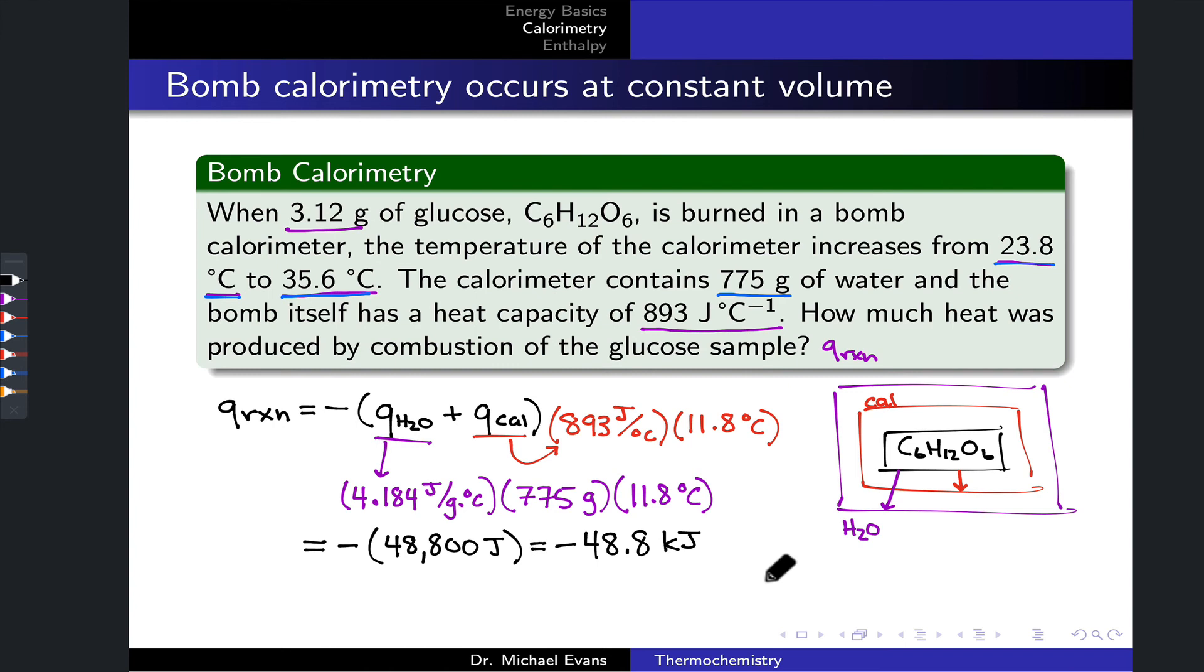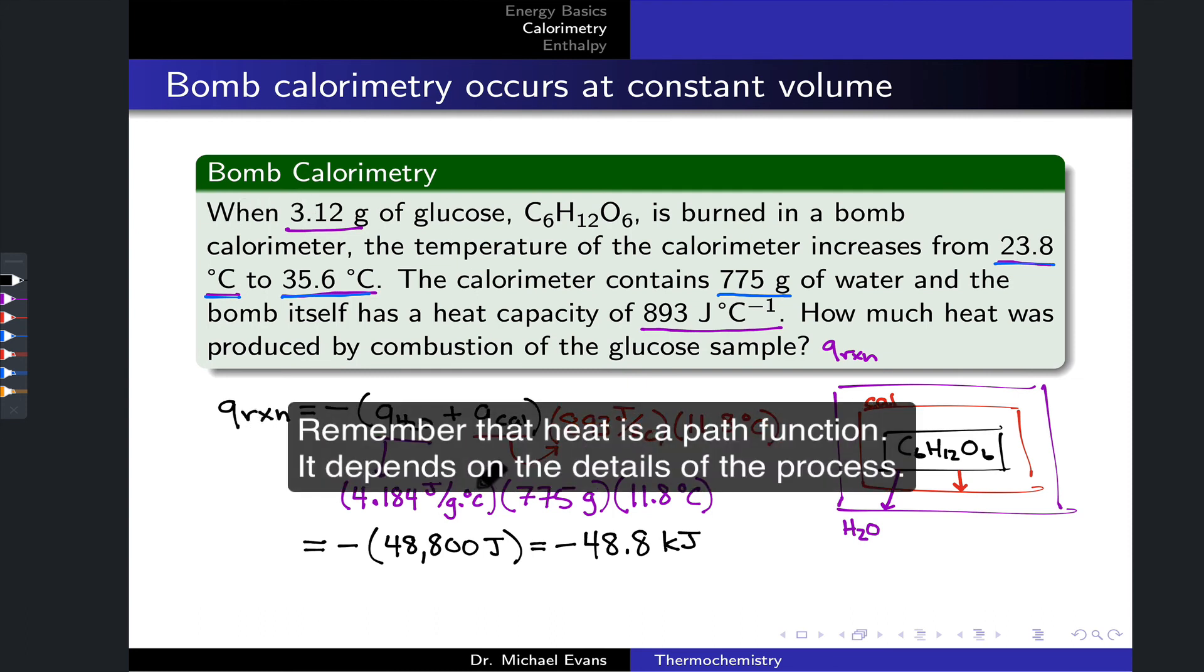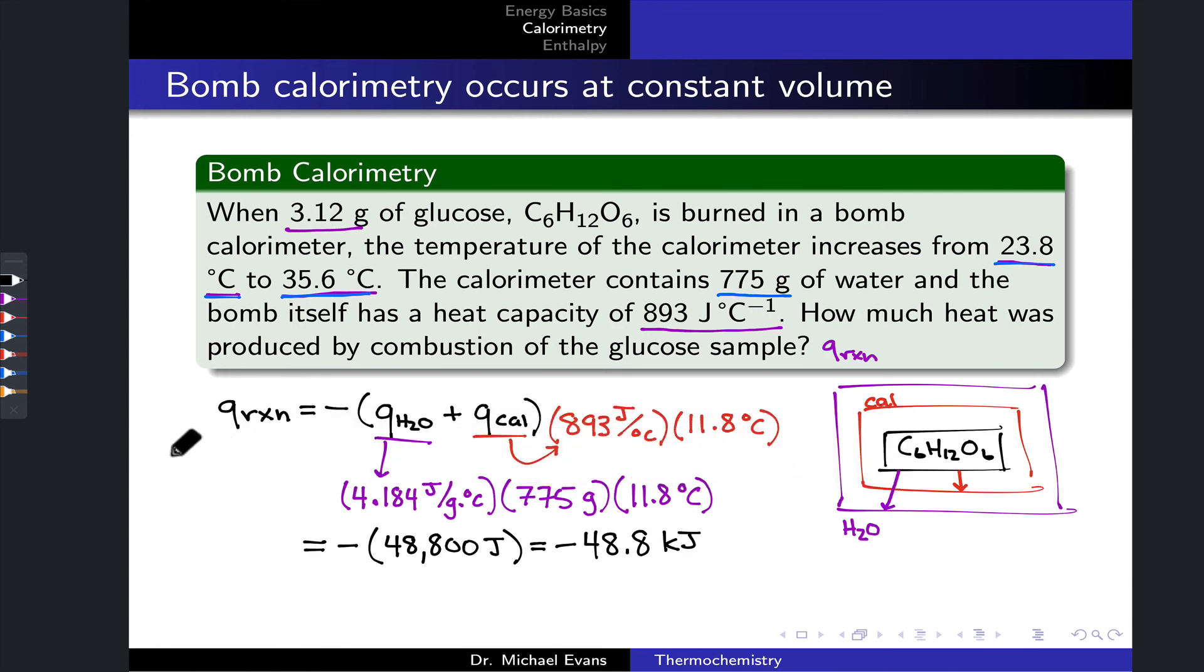The last thing I'll say before leaving this series of videos is that this heat, Q reaction in a bomb calorimetry situation, is fundamentally different from the heat we would obtain if we ran the combustion of glucose under constant pressure. This Q reaction is a constant volume situation, and that corresponds to a change in a particular thermodynamic state function.